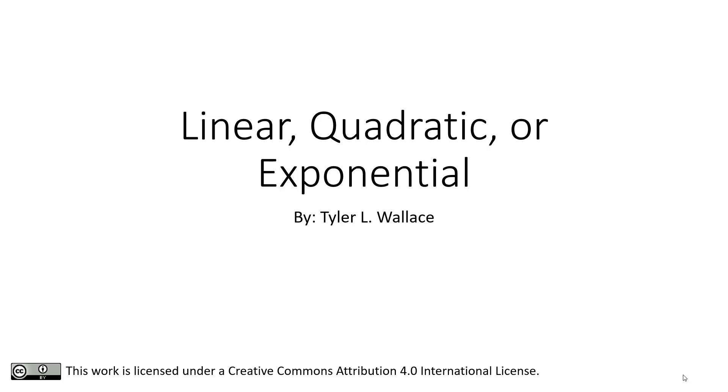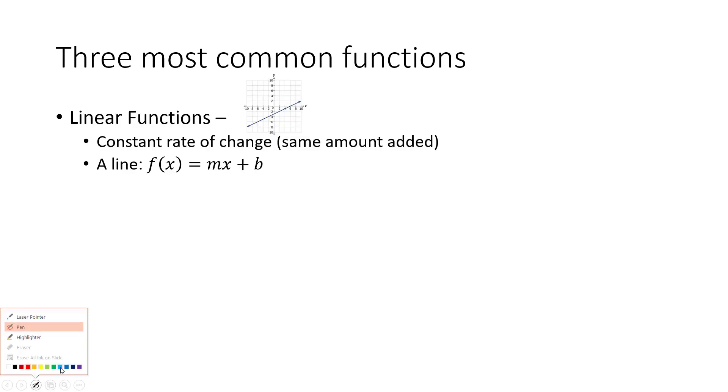It's important that we're able to identify what type of relationship we're working with based on the data that we're looking at. So these three most common types of functions, first we talked about the linear function. A linear function is a straight line made out of a constant rate of change.